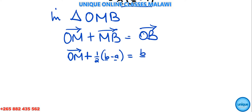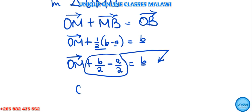To find OM, we move everything else to the right-hand side. So OM = b - b/2 + a/2. Taking common denominator 2: OM = (2b - b + a)/2.